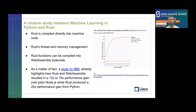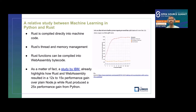Another key advantage of Rust over Python is thread and memory management. While Rust does not have a proper garbage collector like Python, the compiler enforces checks for invalid memory references and leaks. According to a study by IBM, Rust paired with WebAssembly actually performs up to 12 to 15 times more than Node.js and approximately 25 times more performance compared to Python.